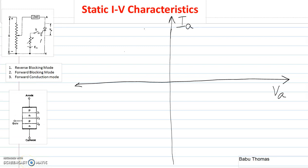Hello everyone. Now we are going to discuss about the static IV characteristics of a thyristor. Static IV characteristics is nothing but a plot between the anode voltage VA and the anode current IA.